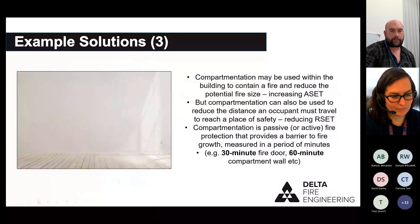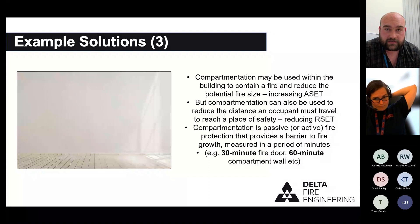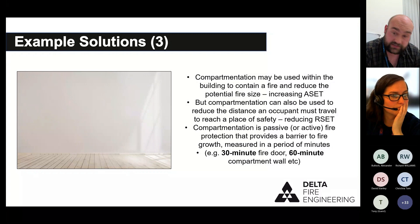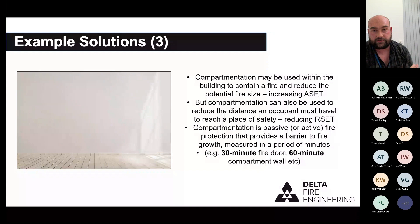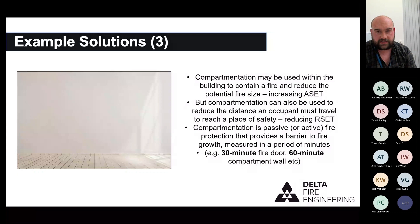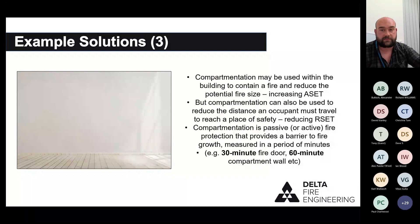Compartmentation is another example — what I call the most boring image in the presentation, just a picture of a blank wall representing fire-resistant construction. If we upgrade a wall to achieve a certain fire resistance, we're actually both increasing ASET and reducing RSET. We contain the fire to a single compartment, reducing available fuel, which increases ASET. And if someone passes that compartment boundary they reach a place of relative safety, which reduces the time needed to reach safety — reducing RSET.